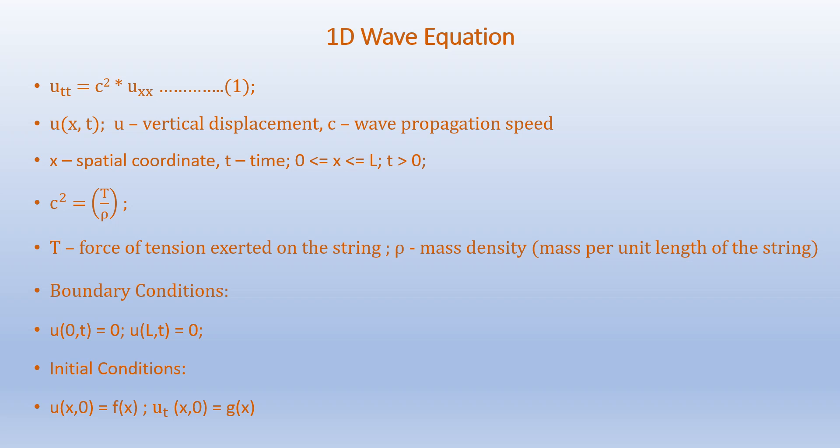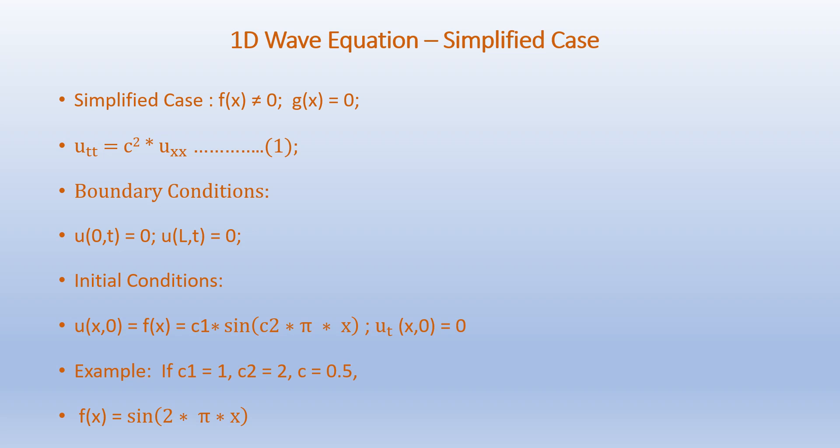The boundary conditions are given as u(0, t) equals 0 and u(L, t) equals 0. The initial conditions are given as u(x, 0) equals f(x) and u_t(x, 0) equals g(x), where u_t is ∂u/∂t. We will simplify this particular case further by considering f(x) not equal to 0 but g(x) equals 0. Accordingly we get u_tt equals c squared times u_xx, with boundary conditions u(0, t) equals 0 and u(L, t) equals 0, and initial condition u(x, 0) equals f(x).